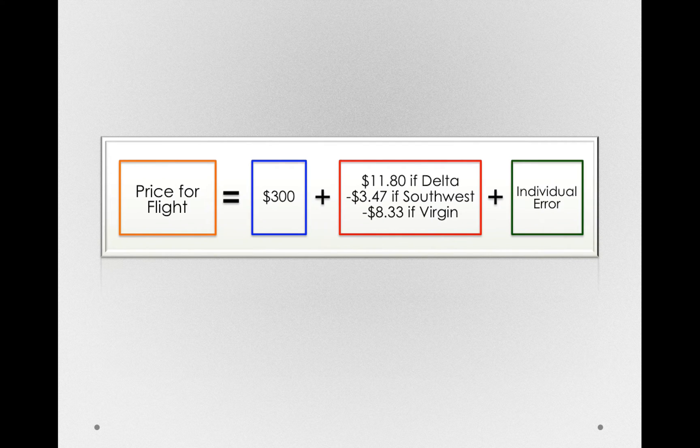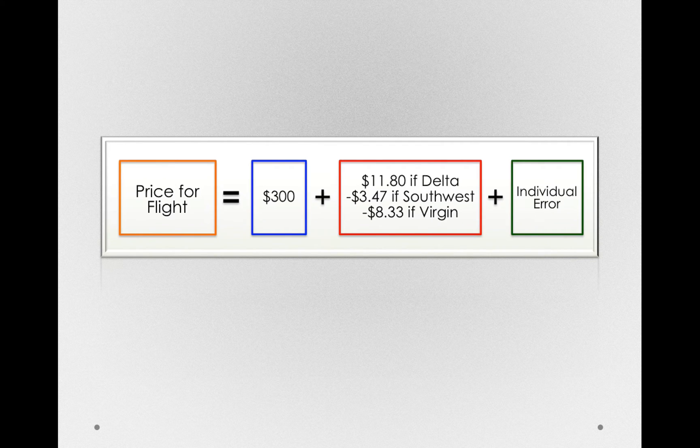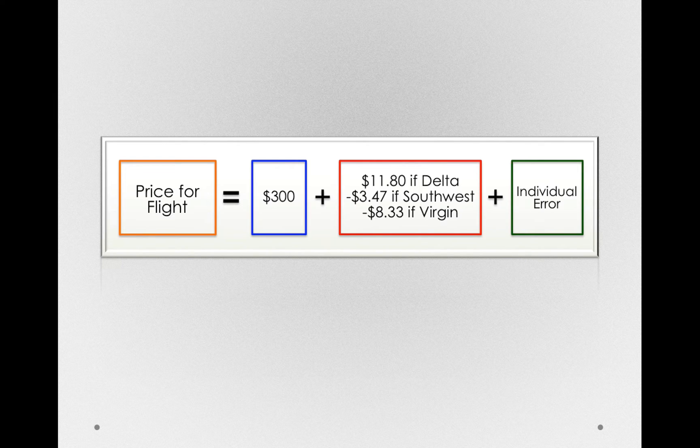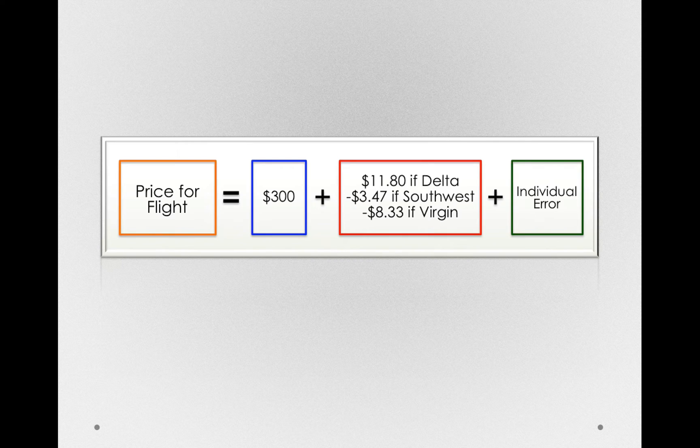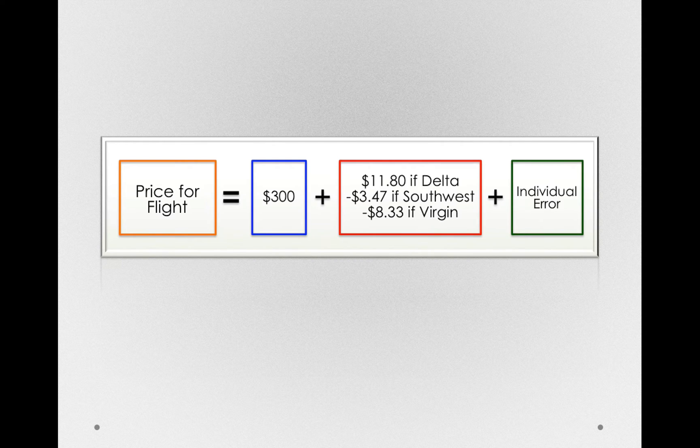Our price of flight was equal to 300, the overall average, plus some offset, plus individual error. So we're going to take each of these components and represent them with the actual symbols of the mathematical model in the general linear model form.